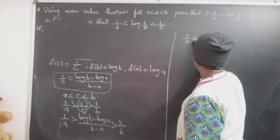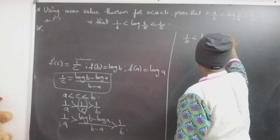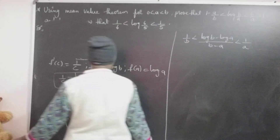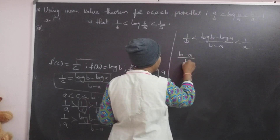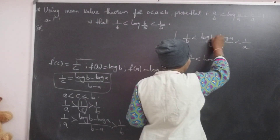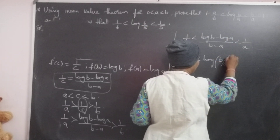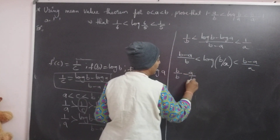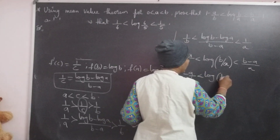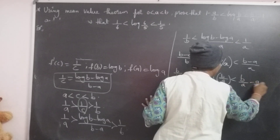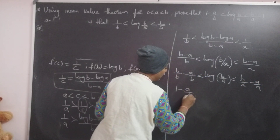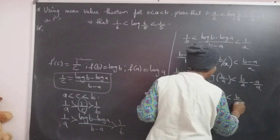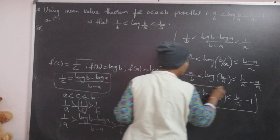Rewriting: 1/b < (log b - log a)/(b - a) < 1/a. Cross-multiplying by (b - a), we get (b - a)/b < log(b/a) < (b - a)/a. Writing separately: 1 - a/b < log(b/a) < b/a - 1. This is exactly the relation that was required to be proved.